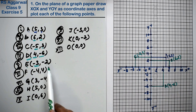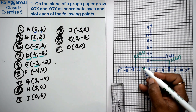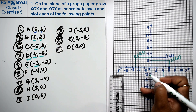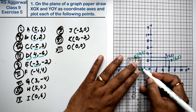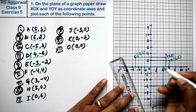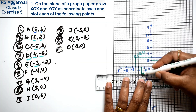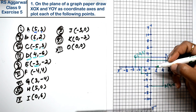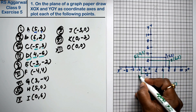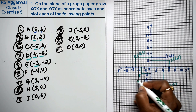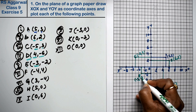Point E is (-3, -2): x is minus 3 and y is minus 2. So this is the point in the third quadrant. x is minus 3 and y is minus 2. So this is point E. Write the coordinate: minus 3 and minus 2.